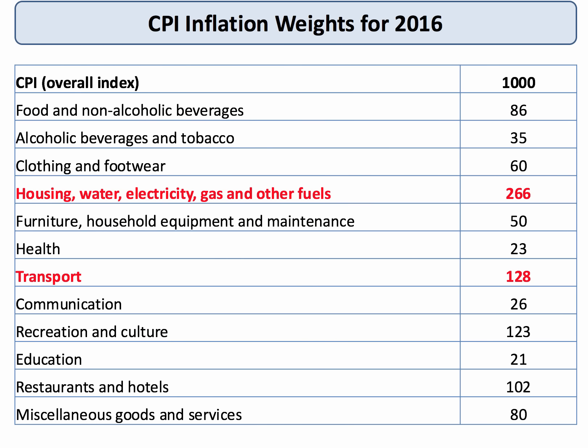Here are the weightings for the consumer price index in the UK for 2016. In red I've highlighted a couple of important ones — housing costs, water, utility bills, electricity and gas. They're the biggest item in the index with a weighting of 266, or 26.6 percent. Transport costs are also significant — just under 13 percent of household income goes on transport, including things like rail fares.